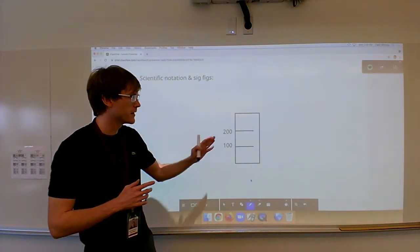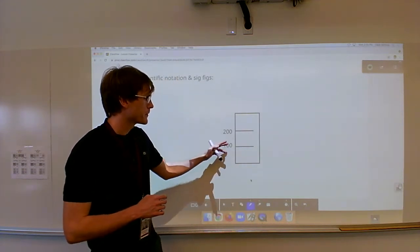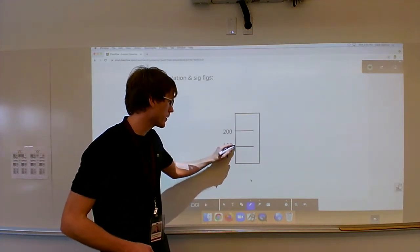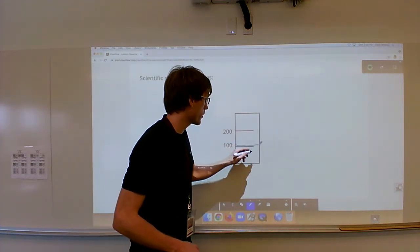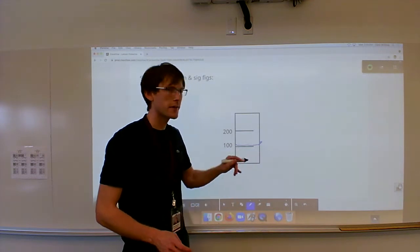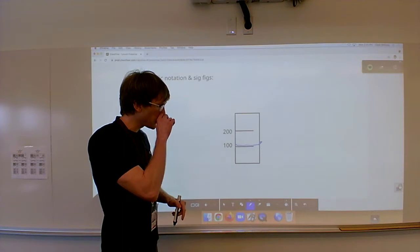So let's consider this badly drawn graduated cylinder. And let's say that we were to put approximately this much water in it. Slightly curved, there's a meniscus there. So if we filled it up to about this point with water,